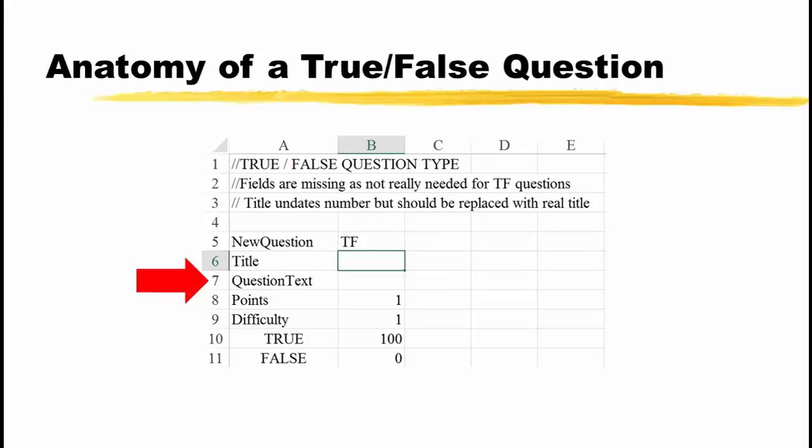Cell A7 contains the text QuestionText, as all one word. The cell B7 is currently empty. This is where you would enter the text of the question. All of the question must be entered in cell B7. It cannot be split across other cells. Excel allows for a cell to contain 32,767 characters of text, so long questions should not be an issue.